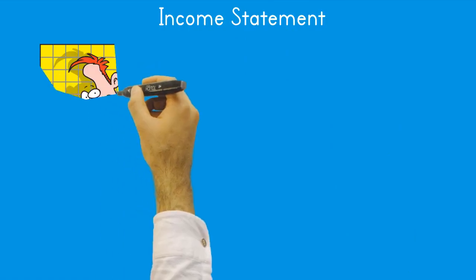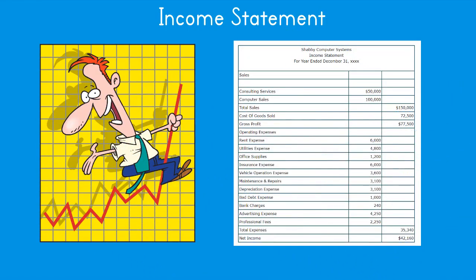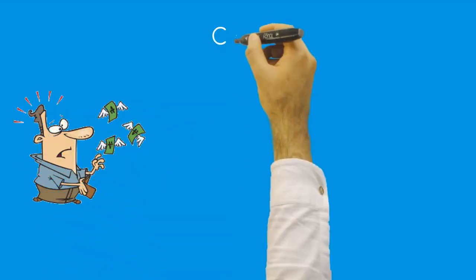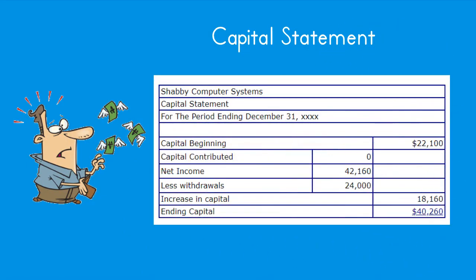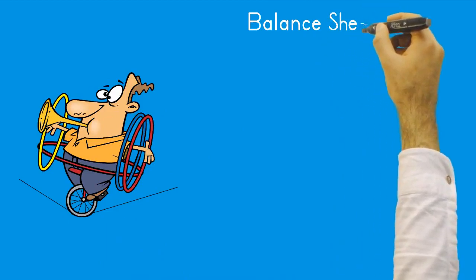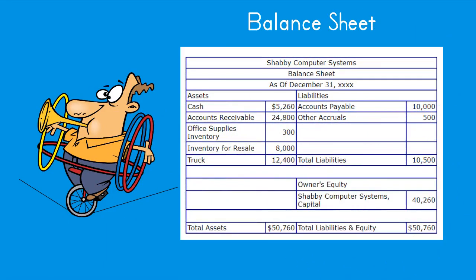Prepare an income statement: all the information needed is found in the revenue and expense accounts section of the after-closing trial balance worksheet. Transfer all figures from the worksheet to the formal income statement — sum the revenues, subtract cost of goods sold and operating expenses to arrive at the net income or loss amount, which is then transferred (closed) to the owner's capital account. Prepare a capital statement: this shows what caused the change in the owner's capital account for the year, using information from the owner's capital account in the after-closing trial balance worksheet. Prepare a balance sheet: transfer all figures from the after-closing trial balance column to the formal balance sheet.